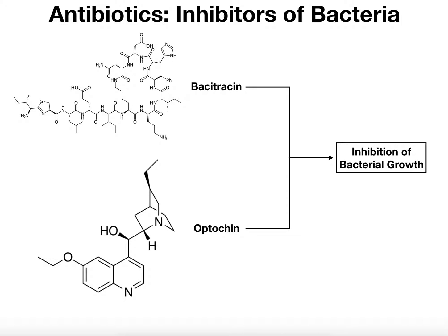First of all, what are antibiotics? Antibiotics, to put it as simply as possible, they inhibit bacteria — they inhibit bacterial growth. These are just two examples: Bacitracin and Optochin, the two we're going to look at in this course. They are a diverse array of chemical structures, and there are thousands and thousands of different antibiotics available. Overall, they're going to inhibit bacterial growth.